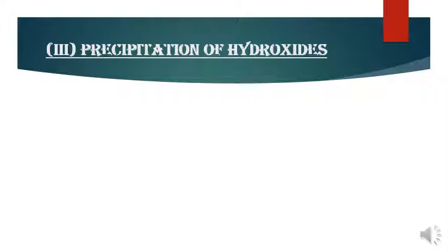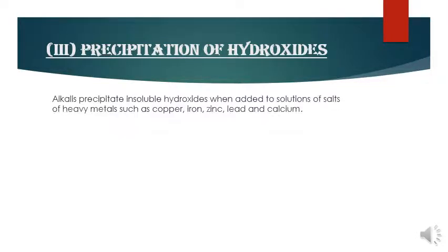What is precipitation? It is the coagulation of two compounds at a point. When you have two solutions, at the point where both meet, you will see precipitation. This coagulation is not soluble. Alkali precipitates insoluble hydroxide when added to the solution of salt of heavy metals such as copper, iron, zinc, lead, and calcium.